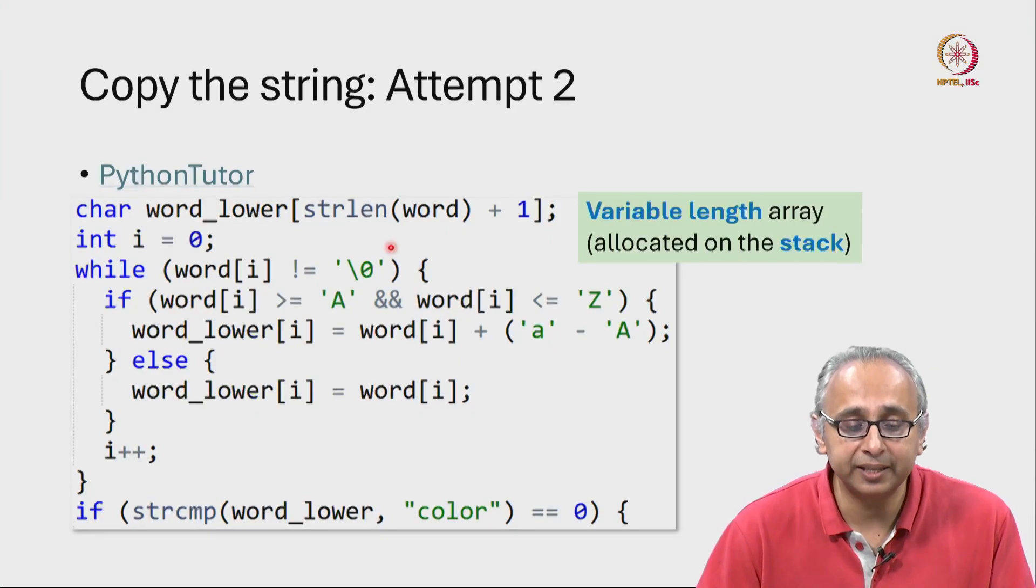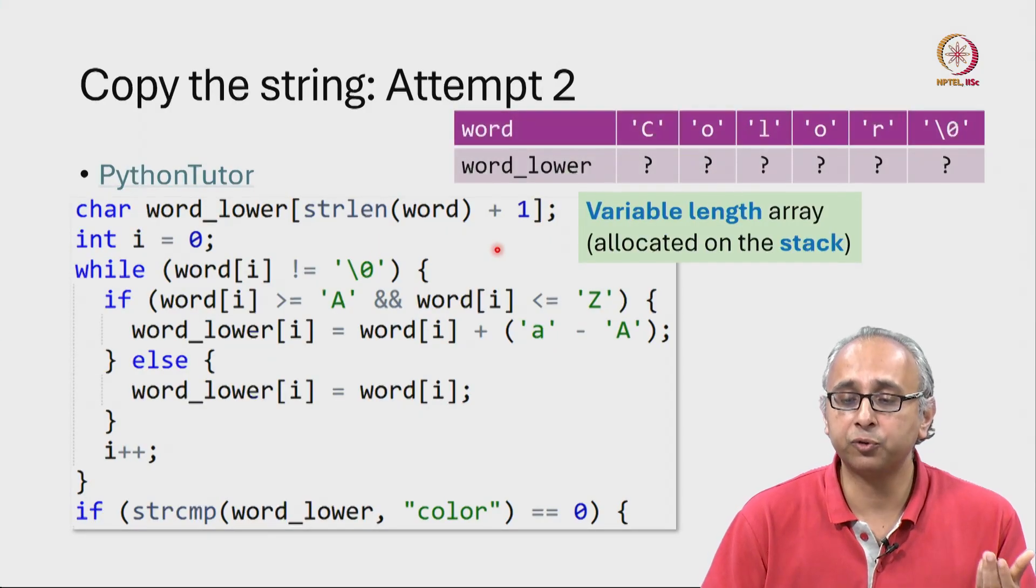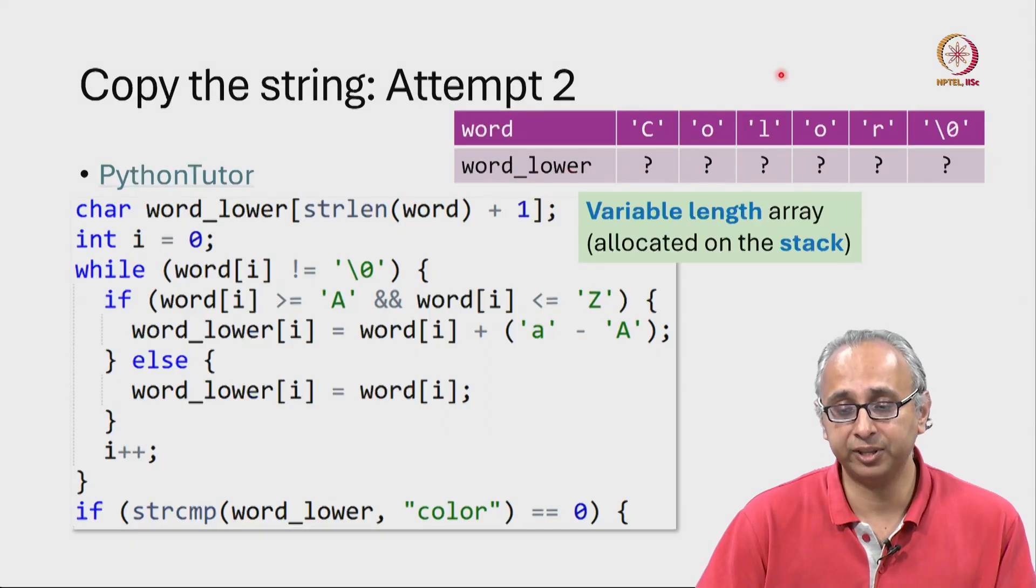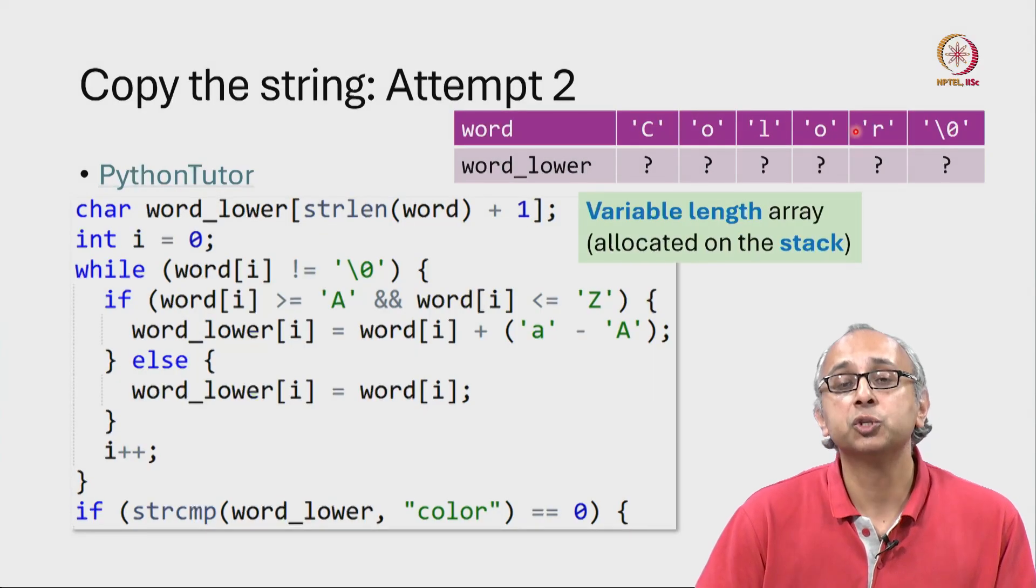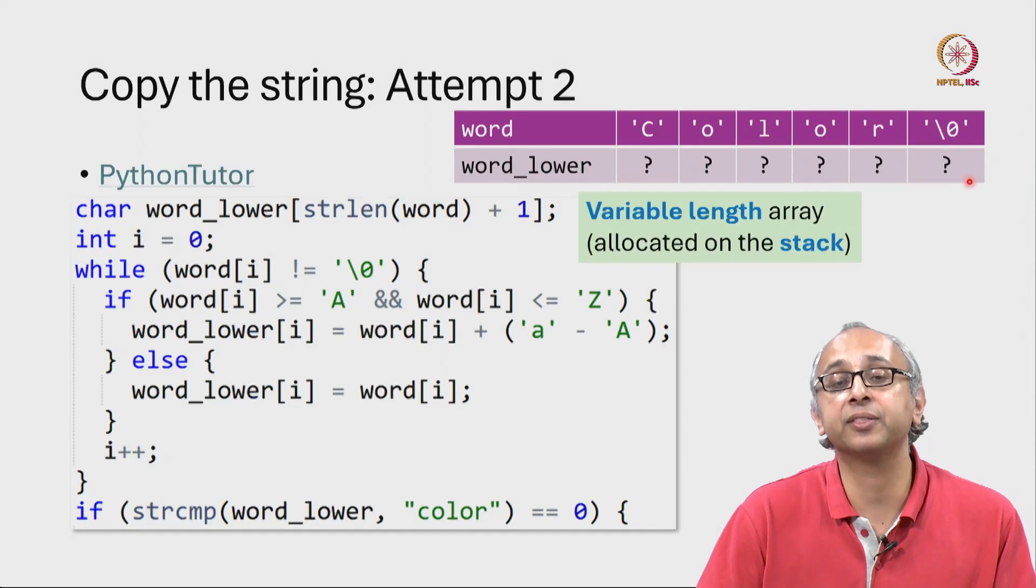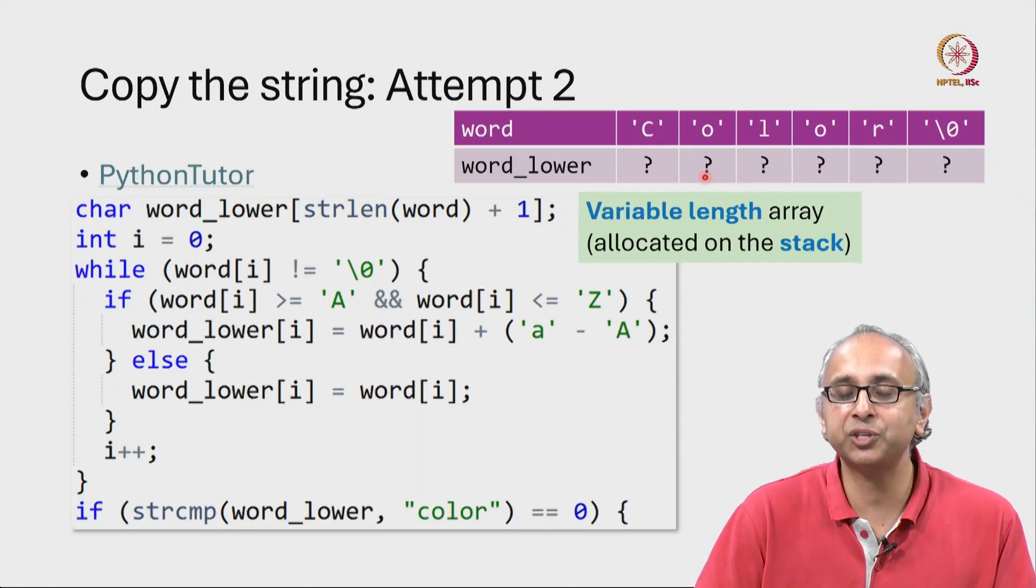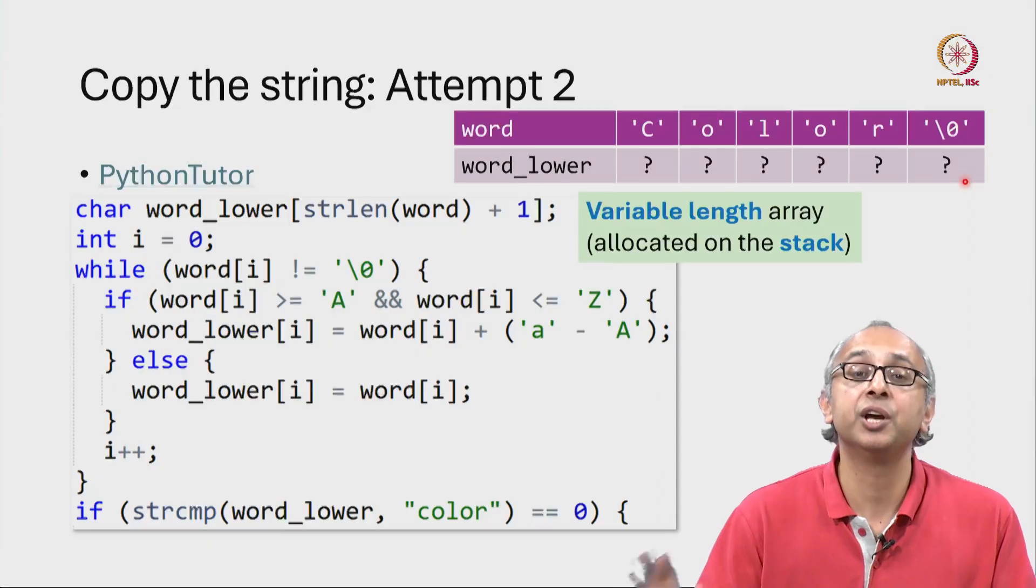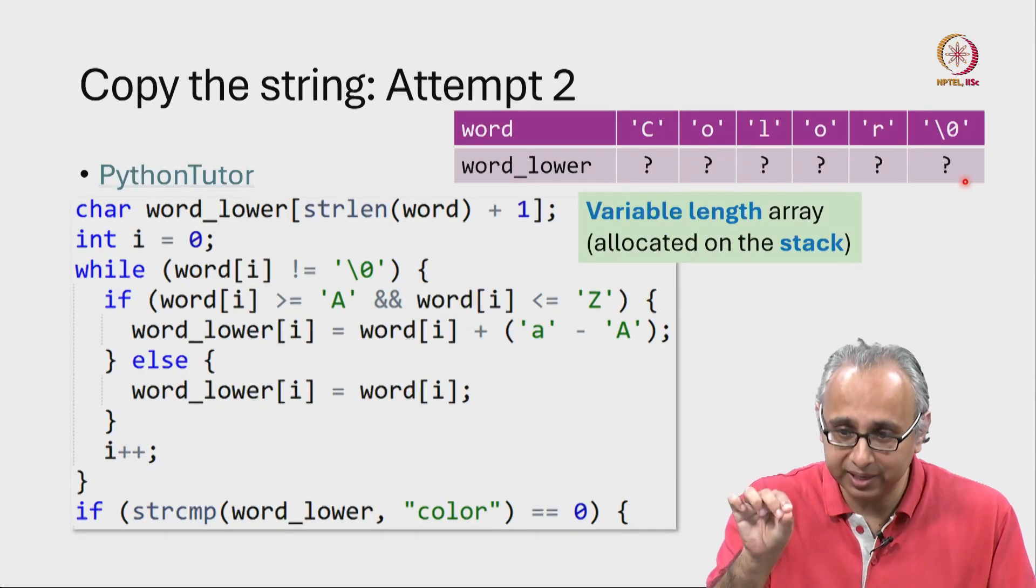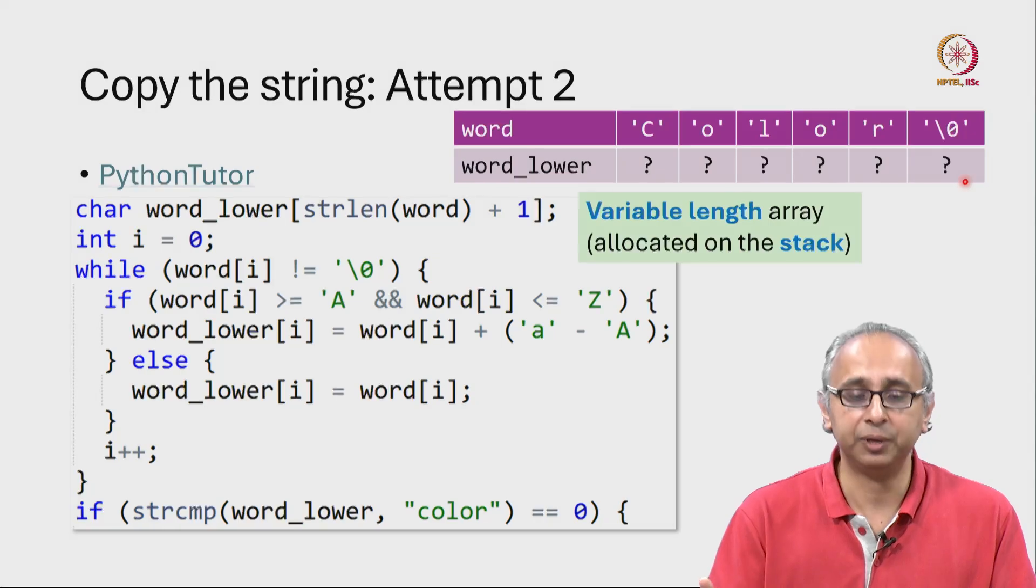So at the time when we create this variable length array, word of course has length 5. There are 5 letters in word. So the original strlen of word is 5 and so this will create an array of length 6 where initially everything is uninitialized. So following Python Tutor I'm putting question marks at each of those locations. Remember actually there is some value over there, it's just that we don't know what that value is.